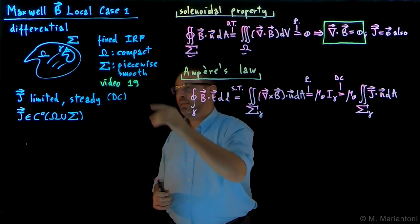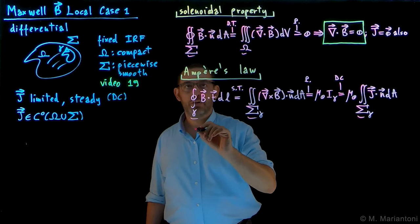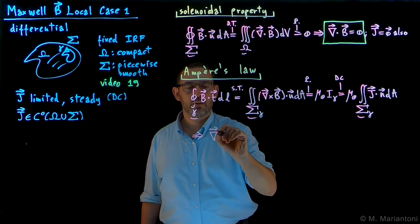This is only true, of course, in steady conditions. So now we have math, physics, and more physics, which is the condition of being steady DC current. So now, because of the arbitrariness of all these structures here, this simply implies that the integrands have to be equal to each other, which means, as a consequence.